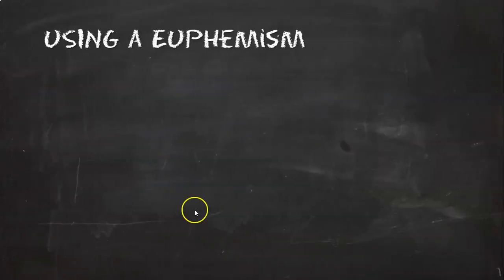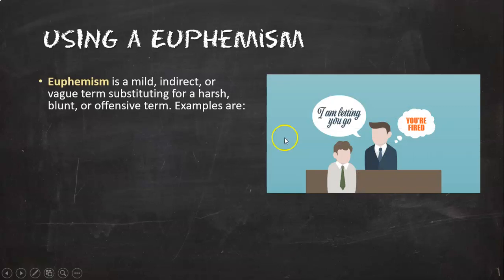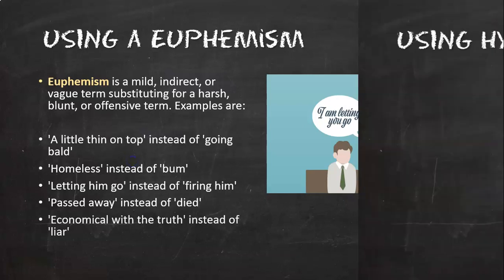Now here's one you hear a lot all the time, it's called a euphemism. A euphemism is a mild, indirect, or vague term substituting for a harsh, blunt, or offensive term. So instead of the boss saying he's gonna get rid of this guy, he's gonna say 'I'm gonna let you go,' but really he's thinking 'you're fired.' Like the other day I asked my wife if I was balding. She said, 'Well, you're getting a little thin on top,' instead of 'Yeah, you're going bald, Mr. McBaldy.' So you could say you're letting him go instead of firing him. You could say someone has passed away, which is unfortunate, instead of died. Or you could say he was economical with the truth instead of he lies all the time.